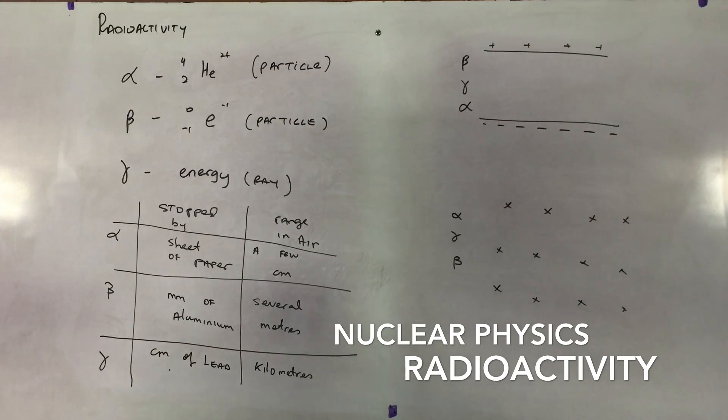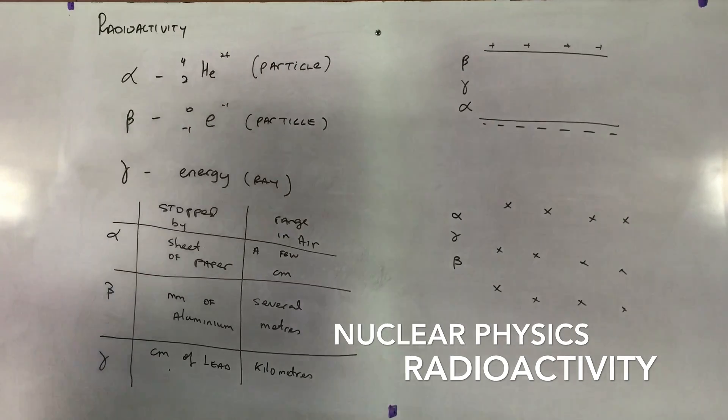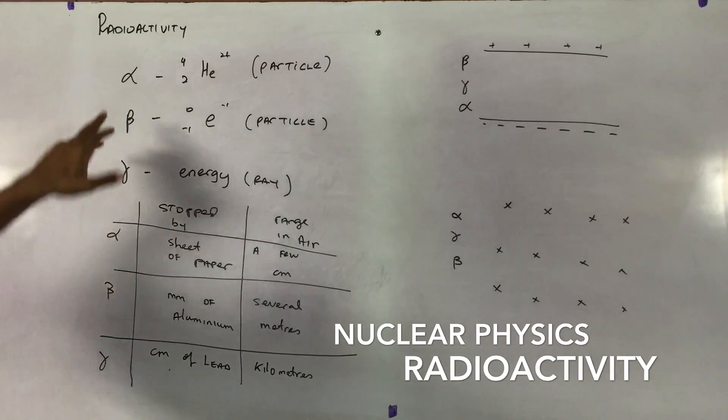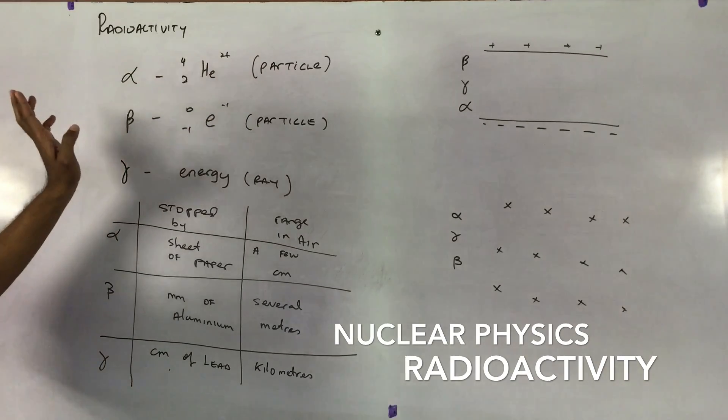The three main types of radiation that we focus on would be alpha, beta and gamma. What are alpha particles? Alpha is a symbol here. Alpha particle is simply a helium atom.